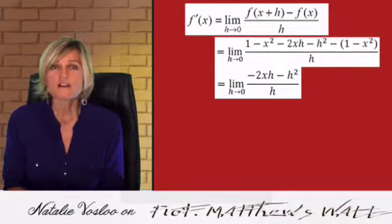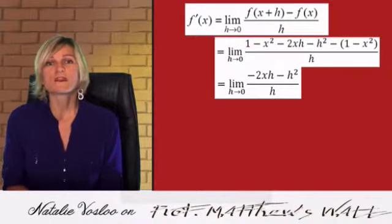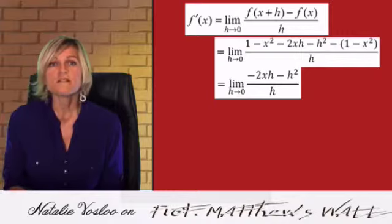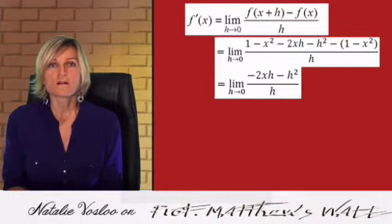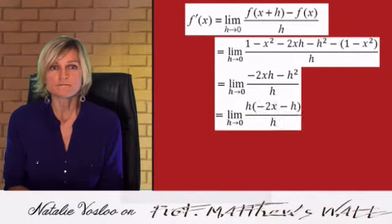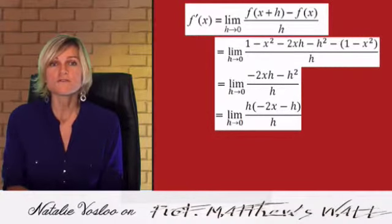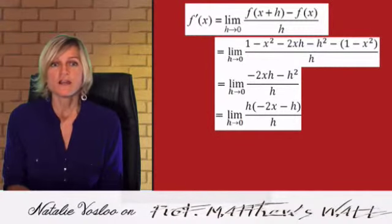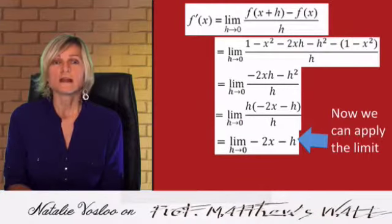At this point, we still cannot substitute in our value of h is equal to 0, because this will make the function undefined. So, we need to do a little trick. We need to take h out as a common factor, so that we can cancel the h's at the top and the bottom. So, if we take h out as a common factor inside the bracket, you'll be left with minus 2x minus h, and we can cancel the h's, and now we are ready to apply the limit.